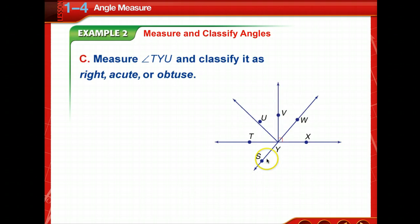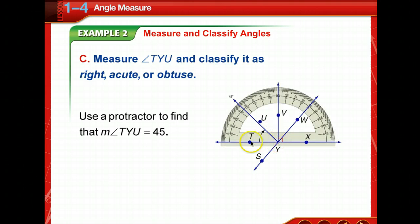Now, we're to measure TYU, and classify it as right, acute, or obtuse. So is it right? Is it obtuse? Is it acute? Well, if we were to lay a protractor on it, notice that this time, it's less than 90. So we're going to use the smaller side, and it lies right on 45. 45 is smaller than 90, so it's an acute angle.